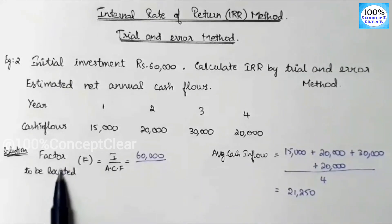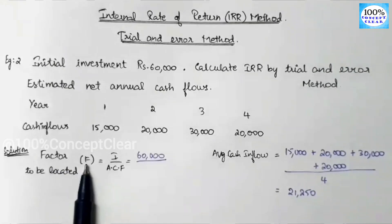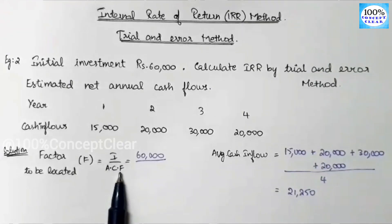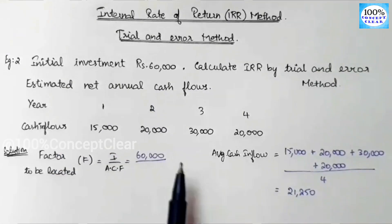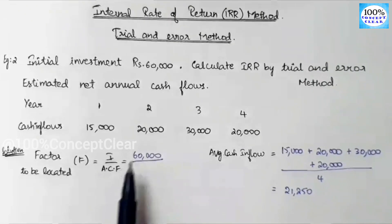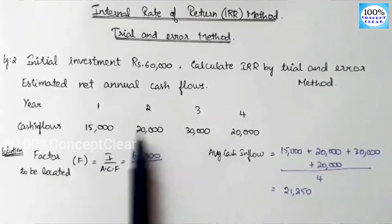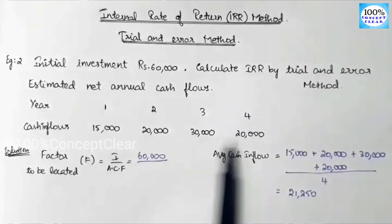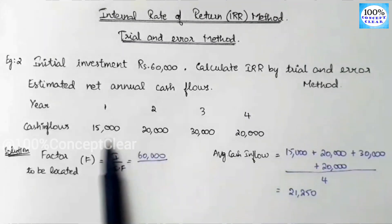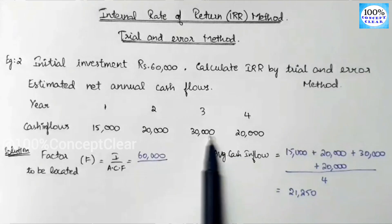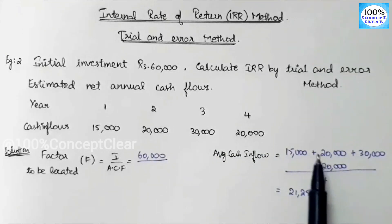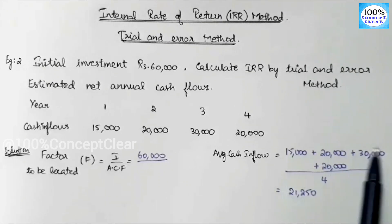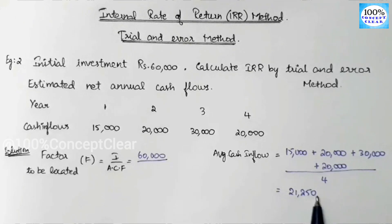First, we have the factor to be located, or PV factor. The formula is investment divided by cash inflow. Investment is 60,000. We have 4 years of different cash inflows, so we calculate the average cash inflow: 15,000 + 20,000 + 30,000 + 20,000 divided by 4, giving us 21,250.